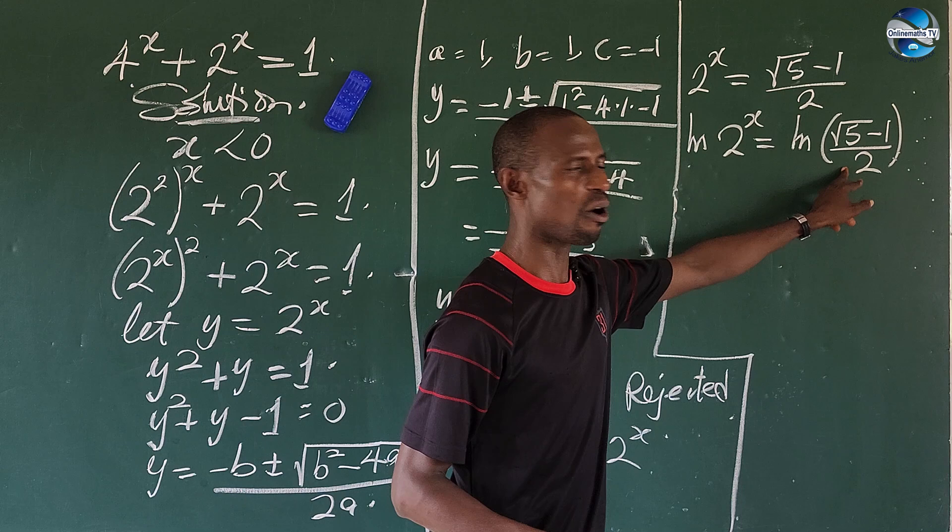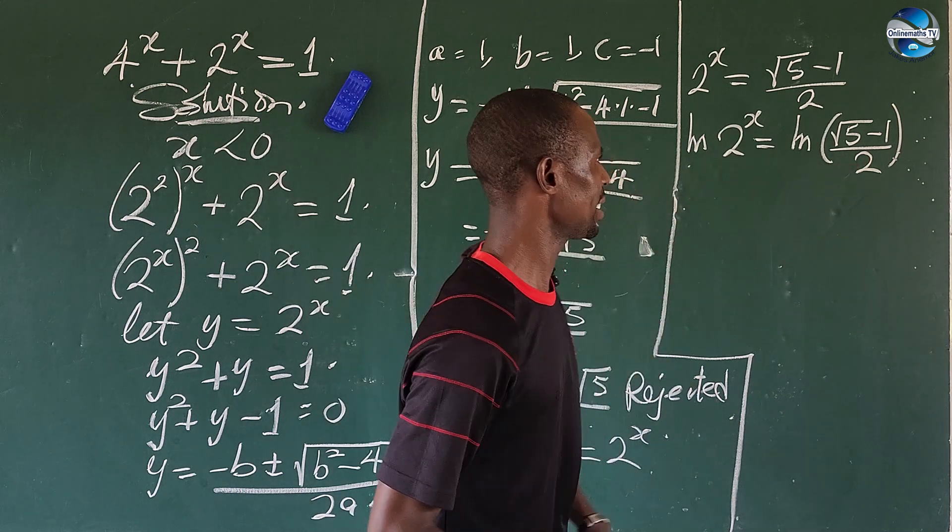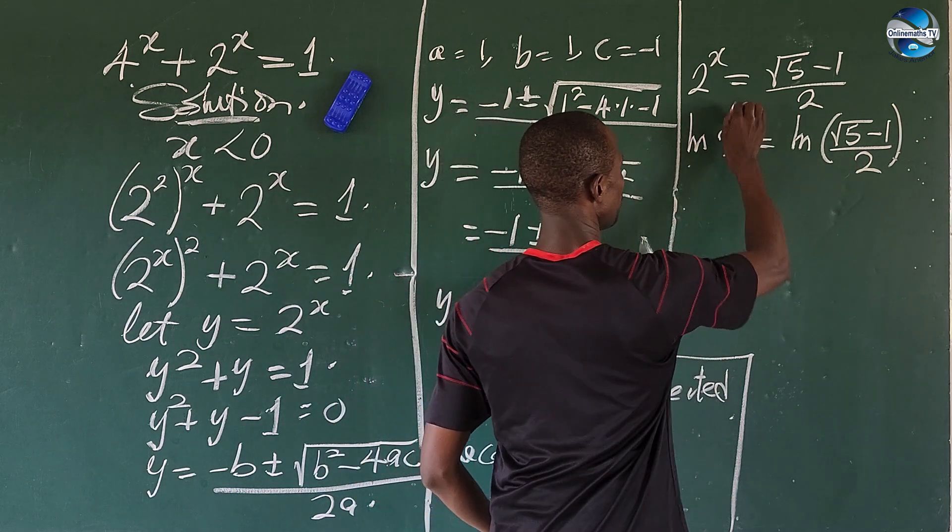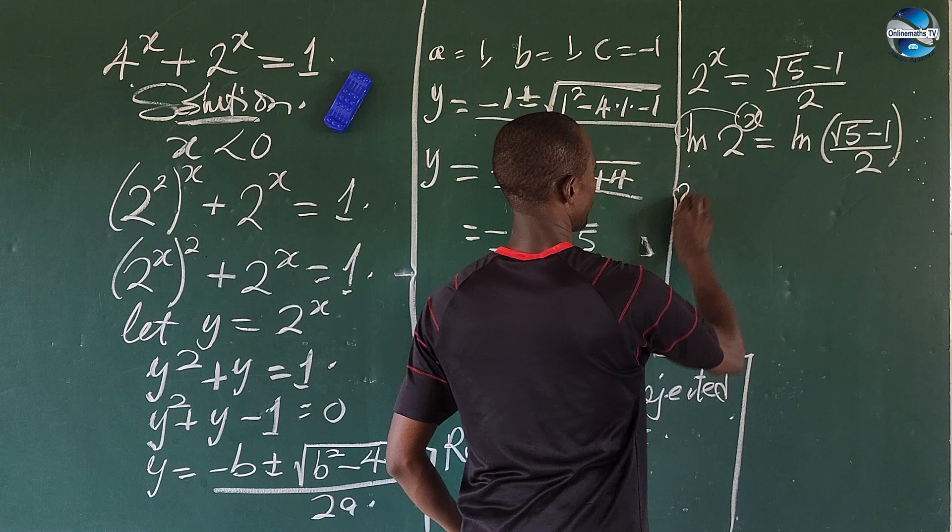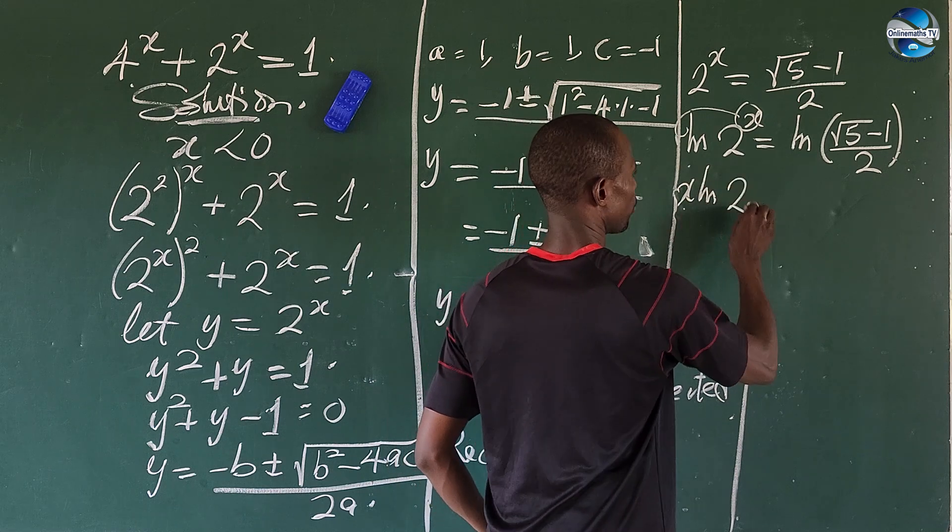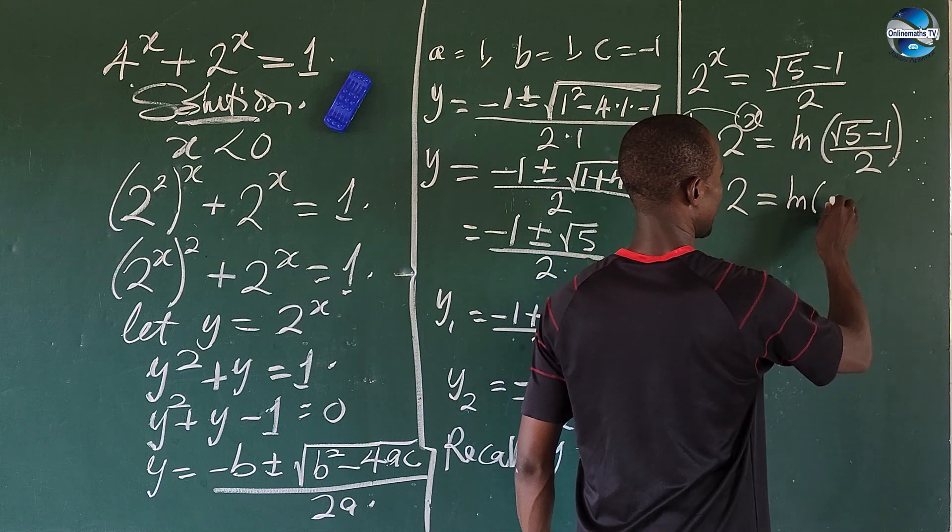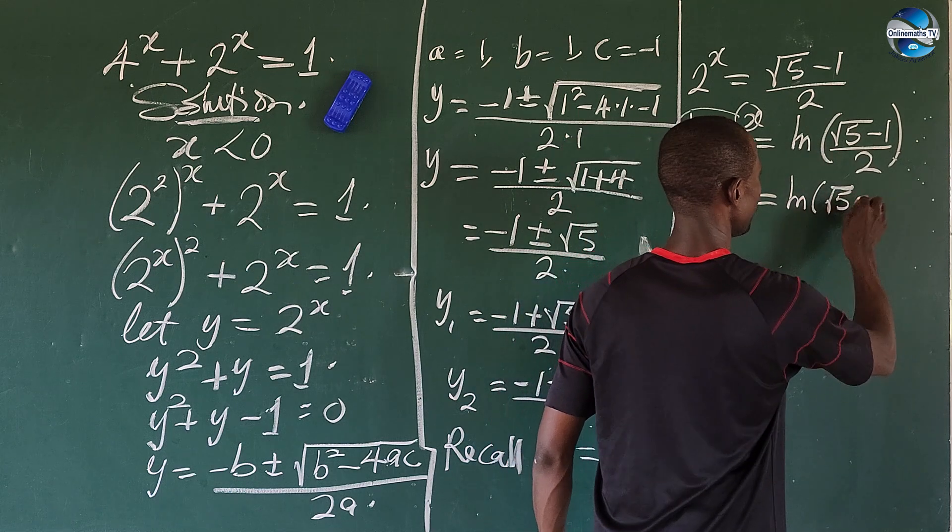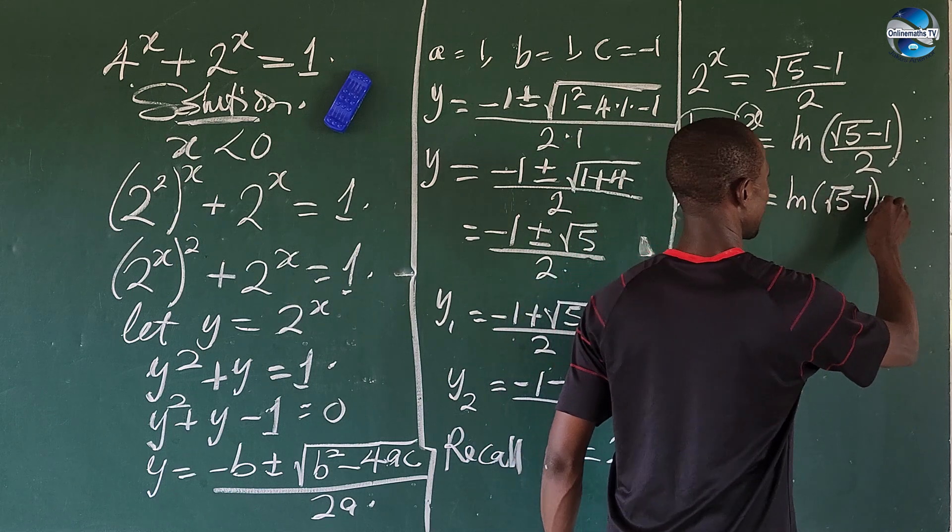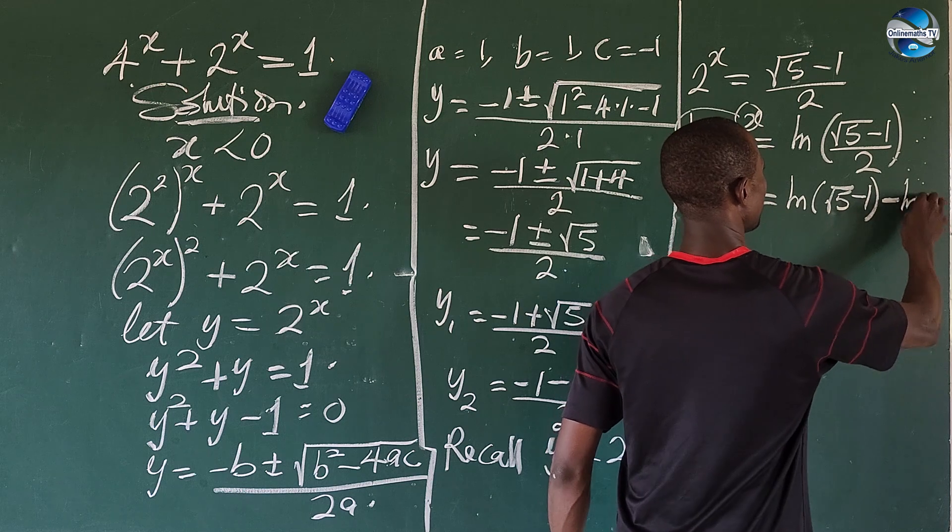You remember this law? This is divisional law of logarithms. So we can apply it here. Then at the same time move this back for here. So we're going to have x ln of 2 equal to ln applying the divisional law bracket the square root of 5 minus 1 close bracket minus ln of 2.